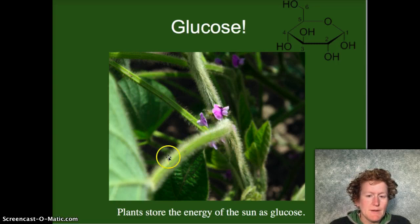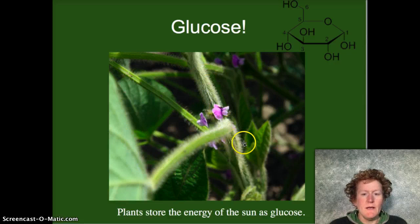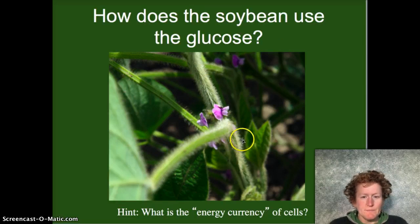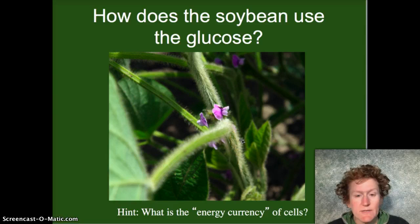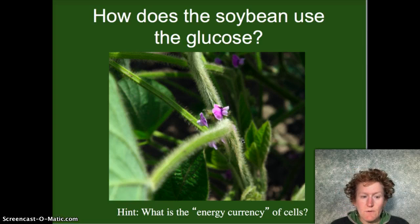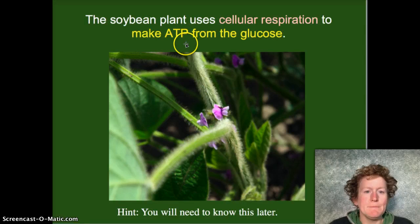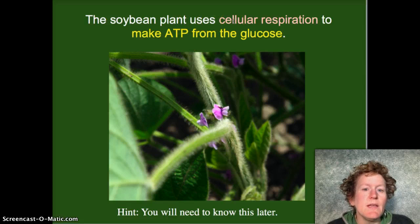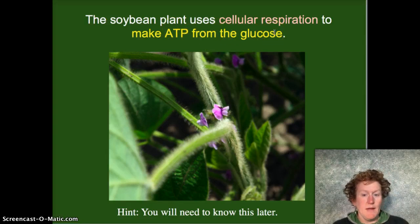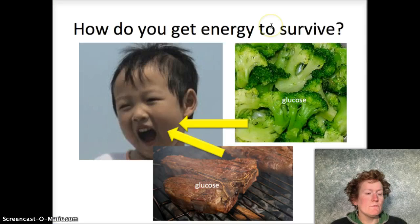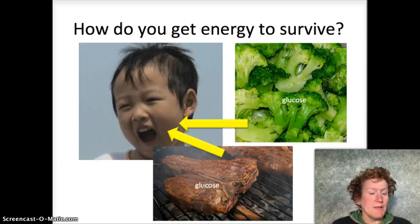This plant right here is a soybean, and you can see the soybean leaves are green and they're storing glucose. The soybean uses its own glucose — it doesn't just make it for animals to eat. All plants use their own glucose and they convert that glucose into the energy currency of cells, which is ATP. The soybean plant uses cellular respiration to make ATP from the glucose that it made using the energy of the sun, carbon dioxide, and water.